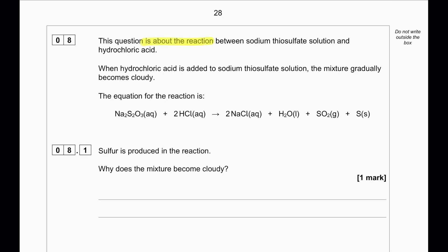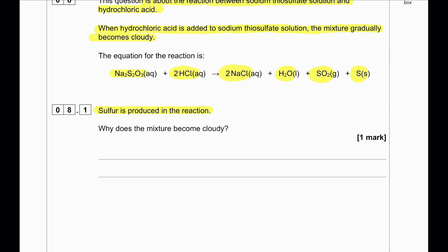This question is about the reaction between sodium thiosulfate solution and hydrochloric acid. When hydrochloric acid is added to sodium thiosulfate solution, the mixture gradually becomes cloudy. Sodium thiosulfate reacts with hydrochloric acid to produce sodium chloride, water, sulfur dioxide, and sulfur. Sulfur is produced in the reaction — it is a solid, insoluble substance, which makes the solution cloudy.